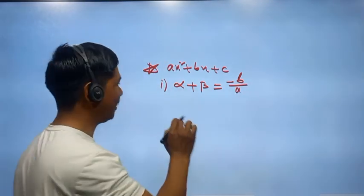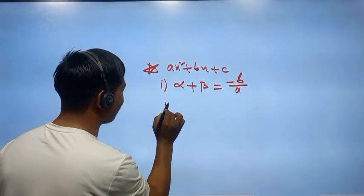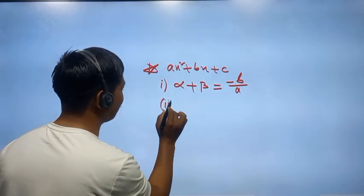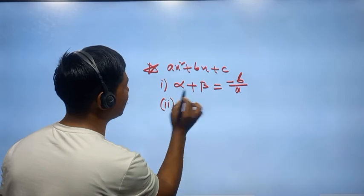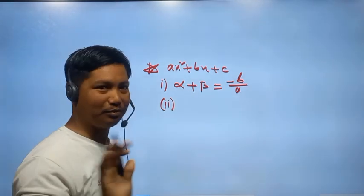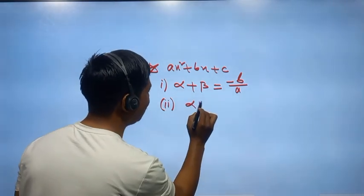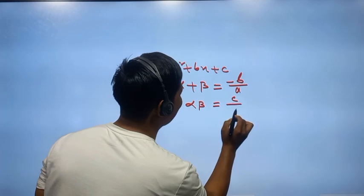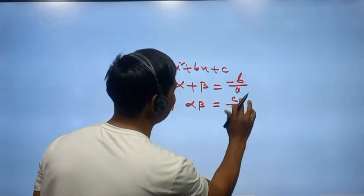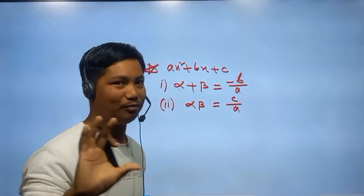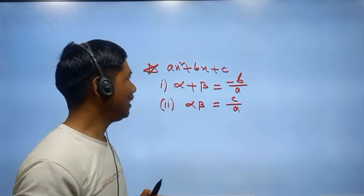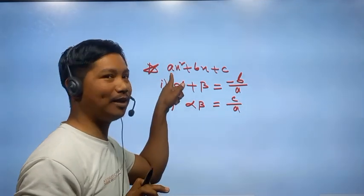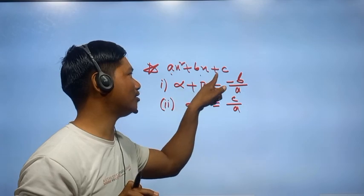So as for this, I will write the formula. This formula: a plus b by a will be written by the formula. So if we have a, this one is b, this one is c.